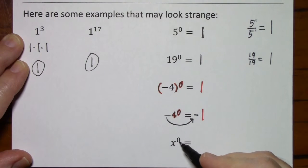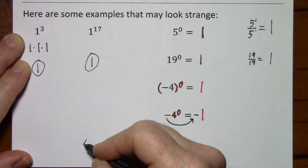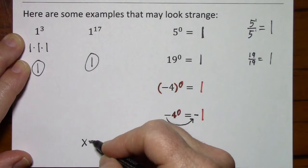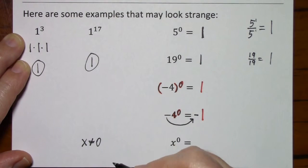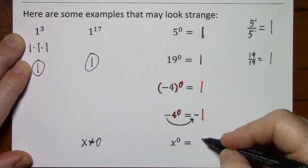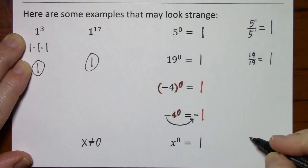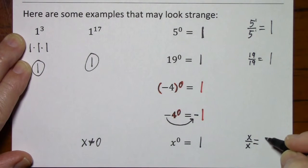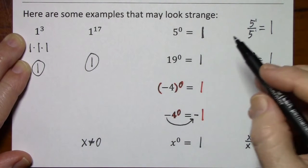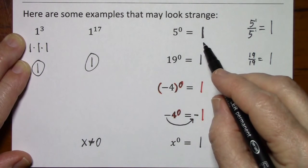And finally, x to the 0 power, provided x is not equal to 0, x to the 0 power is 1. And you can think of that as x over x. Even though I don't know its value, something divided by itself is 1.